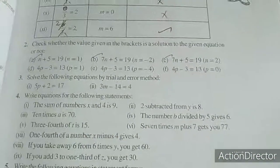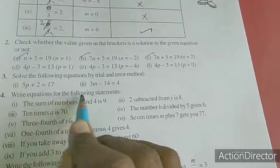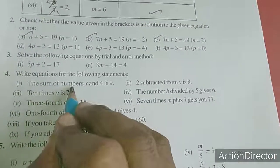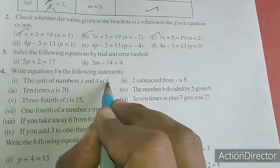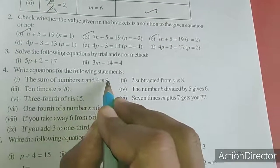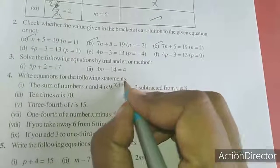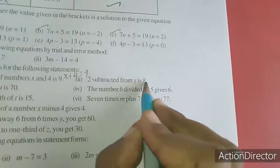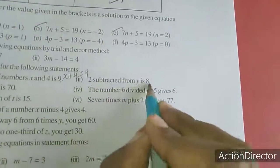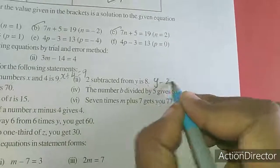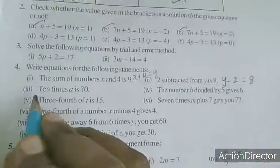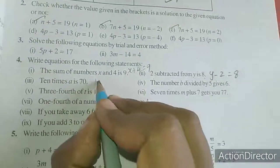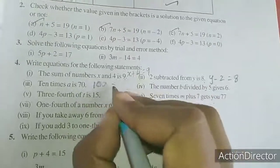Now we will move to the fourth sum. They gave statements and we want to write an equation. The sum of numbers x and 4 is 9, so x plus 4 equal to 9. Second: 2 subtracted from y is 8, so y minus 2 equal to 8. Third: 10 times a is 70 — times means multiply — so 10a equal to 70.